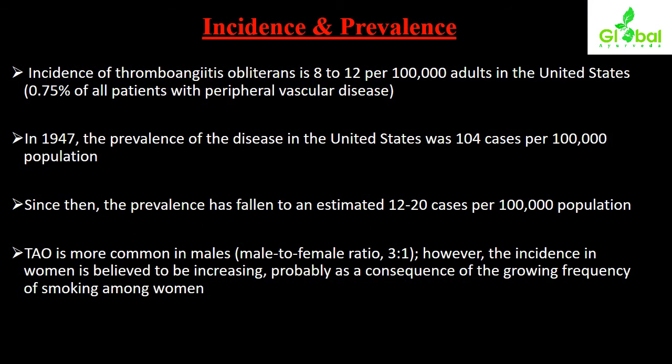The incidence of thromboangiitis obliterans is 8 to 12 per 100,000 adults in the United States, approximately 0.75% of all patients with peripheral vascular disease. In 1947, the prevalence in the United States was 104 cases per 100,000 population. Since then, the prevalence has fallen to an estimated 12 to 20 cases per 100,000 population.